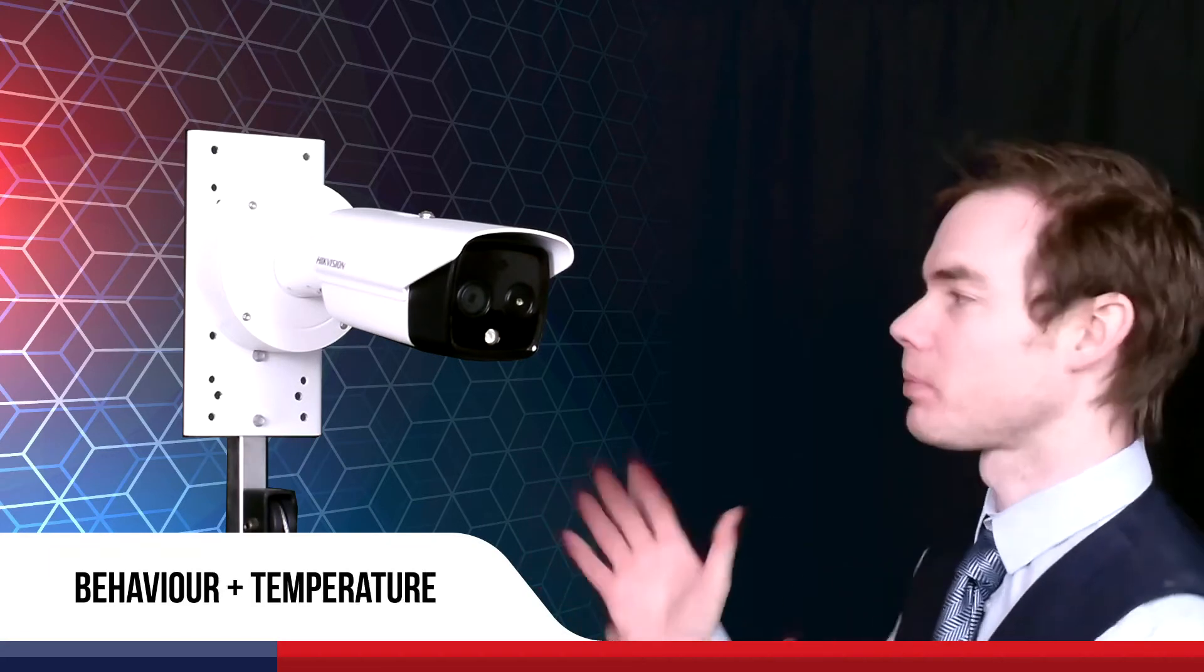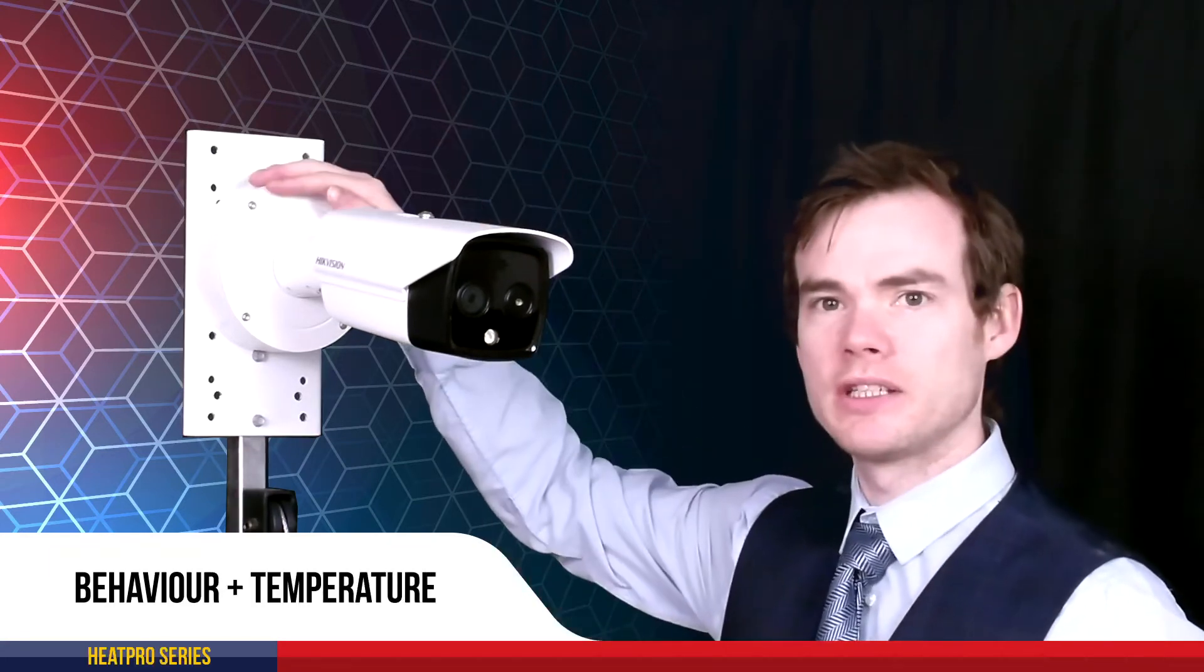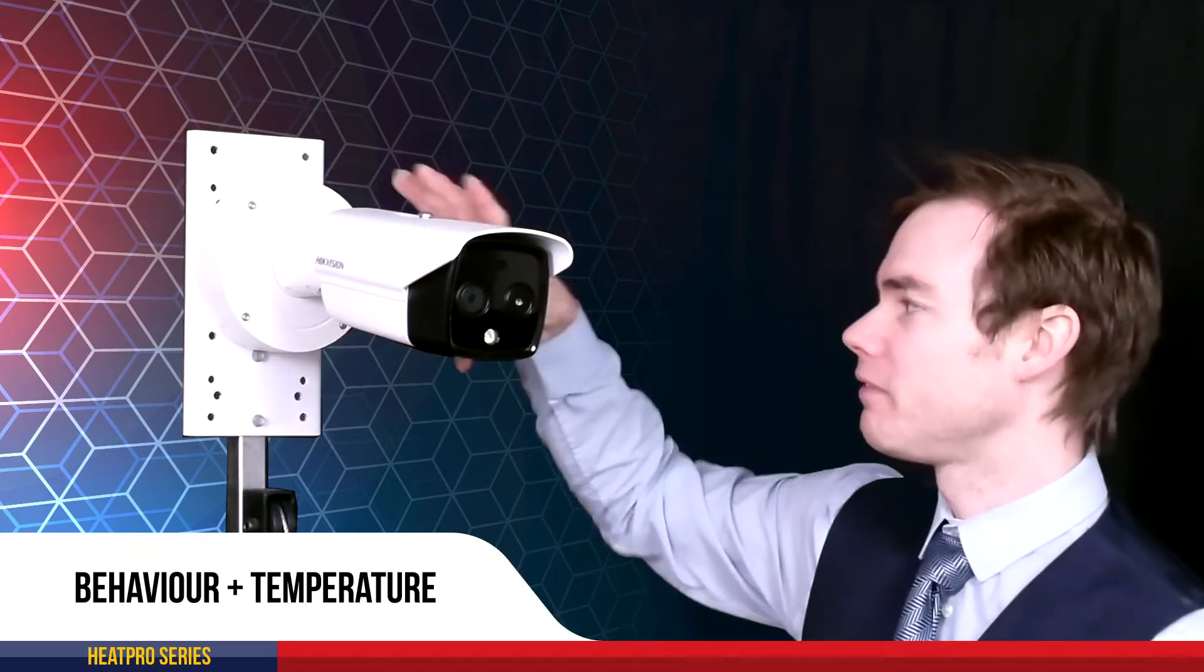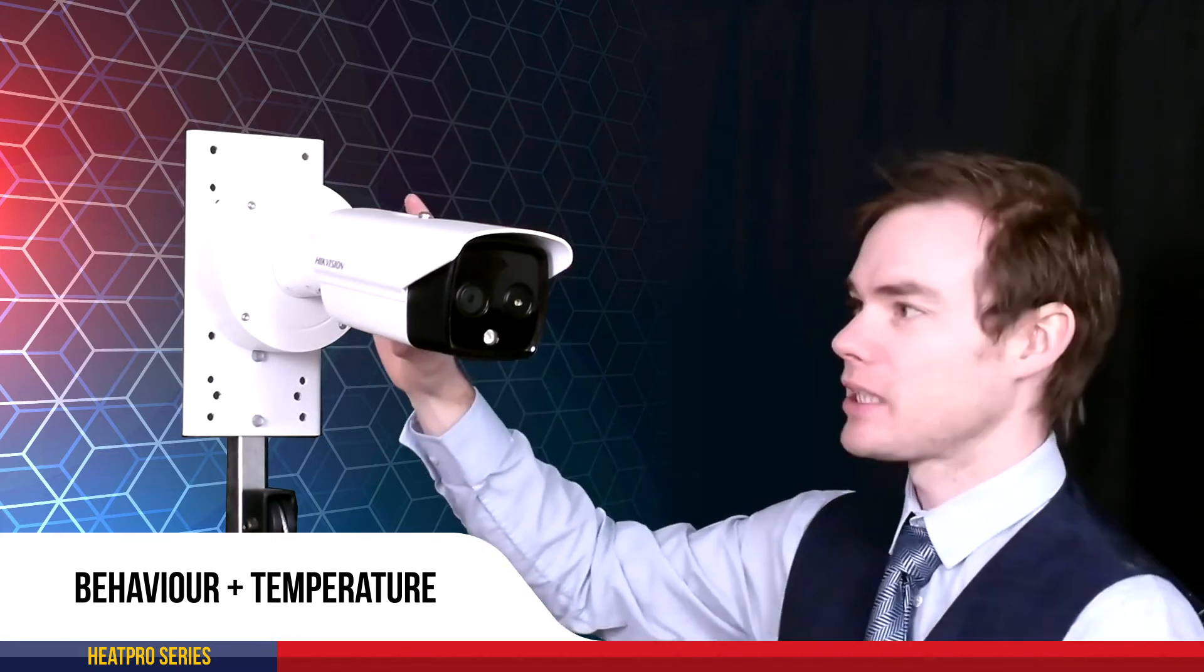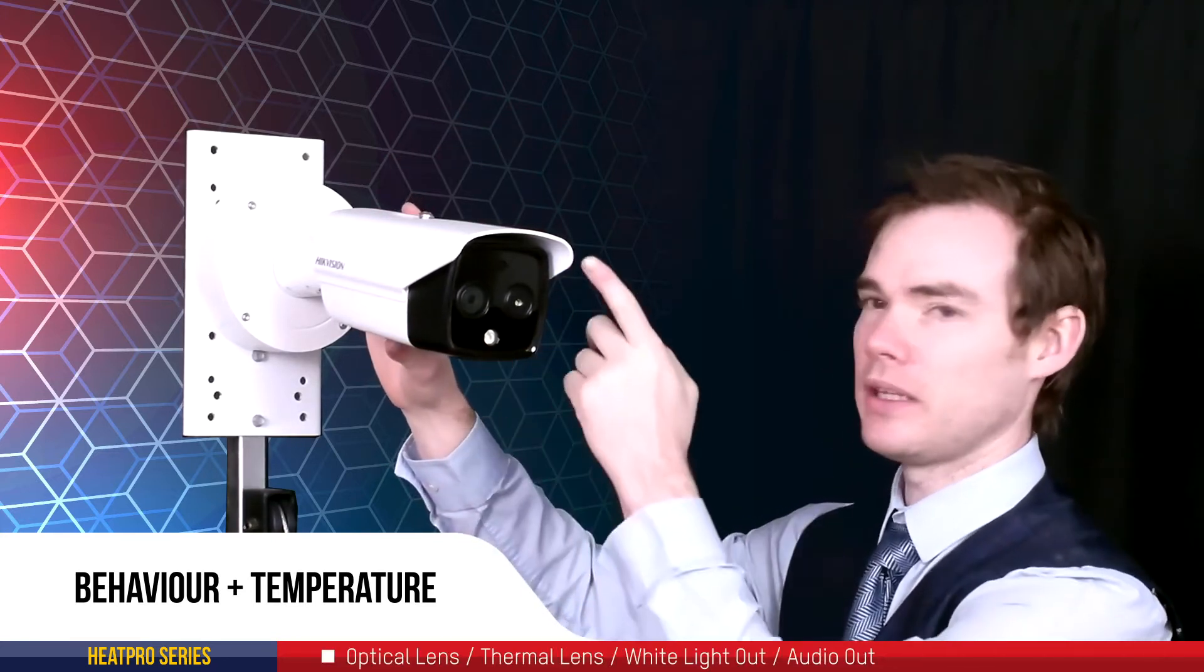Okay so here it is, camera is set up on this tripod at the moment. As I mentioned, it's on the integrated back box. You simply fit the bracket to the wall, put your back box on there, and then fit the camera. This one has an optical and a thermal lens, as well as the white light out and the audio. Now this has an array of different features.